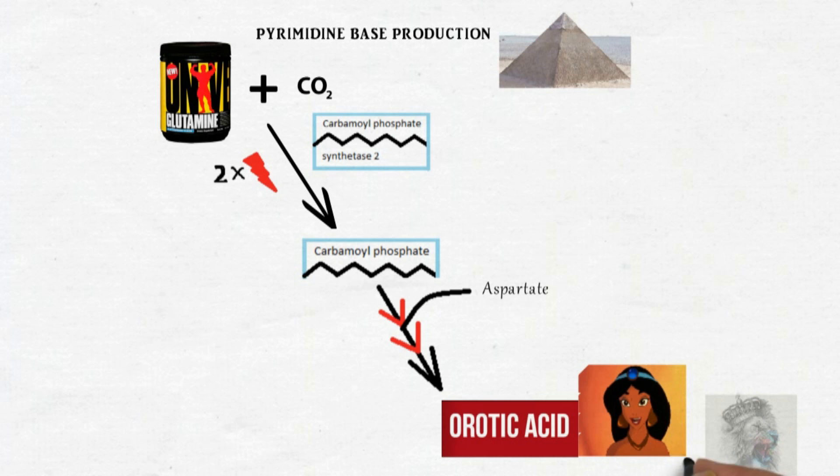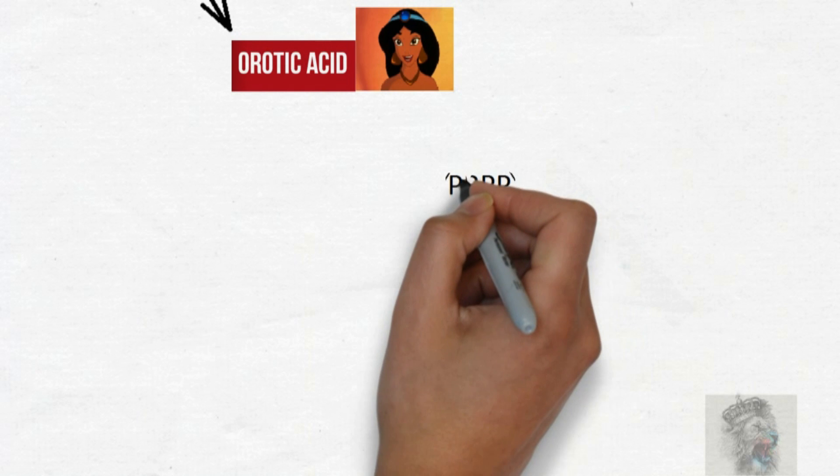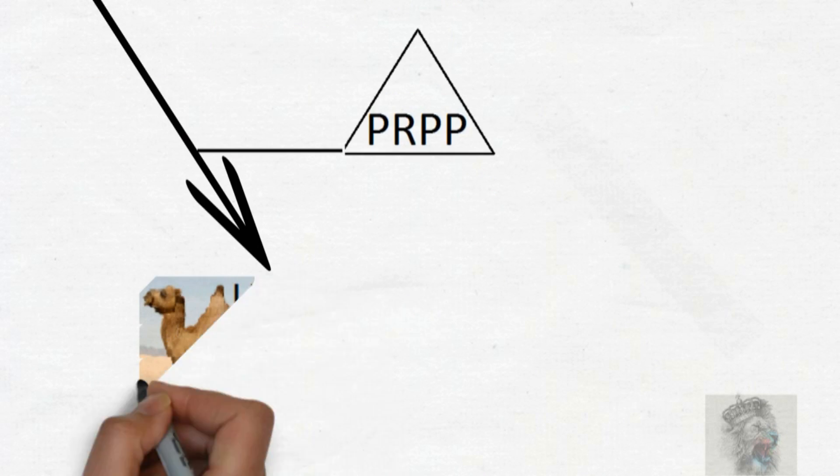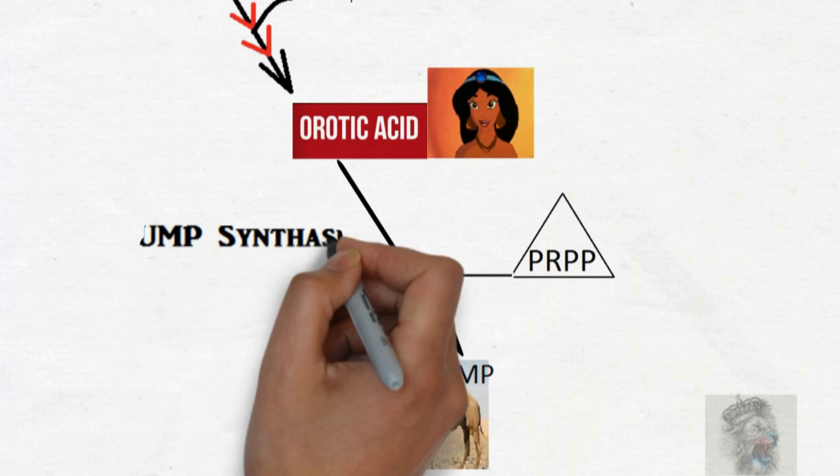Furthermore, this orotic acid along with PRPP converts into UMP using UMP synthase.